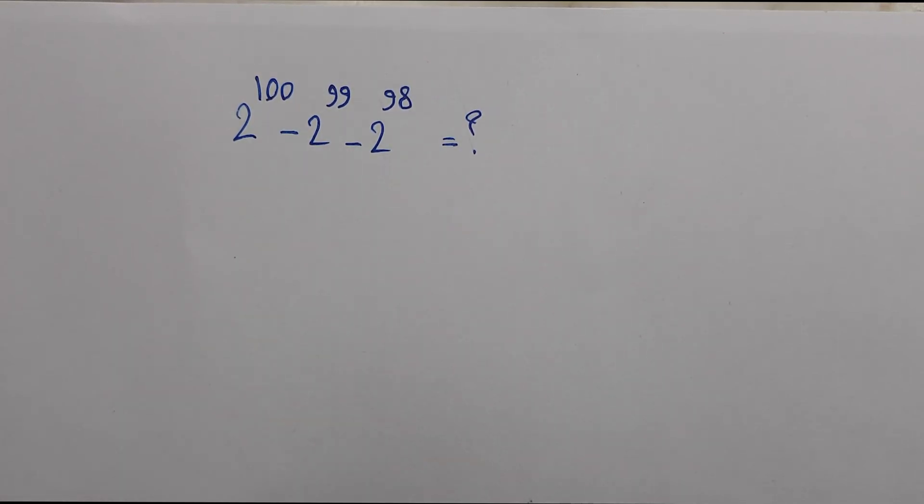Hi guys, we have an Olympic question that we should solve. We have 2 power 100 minus 2 power 99 minus 2 power 98. How can we solve that?